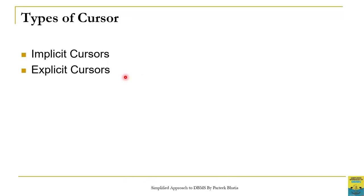There are two types of cursors: one is an implicit cursor and the second is an explicit cursor. This means that this area of memory can be defined implicitly by Oracle, or a user can also define it explicitly. We will discuss the concept and implementation of implicit and explicit cursors in this section.